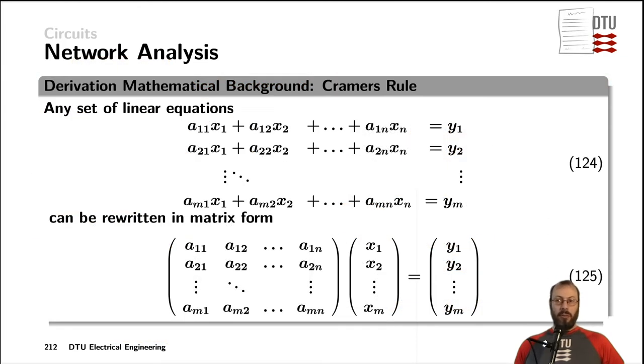Let's get back to the way of rewriting a set of linear equations into a matrix form. I'm choosing A as the parameters that would be the impedances or the admittances, X is the vector that we are interested in to solve, and Y are the sources that we know already. Rewriting the linear set of equations in the matrix form as shown in equation 125, we can in the next step apply Cramer's rule to solve for the vector X.